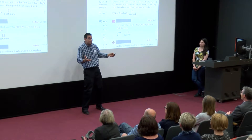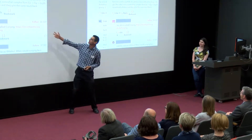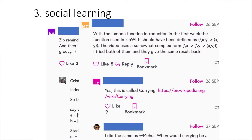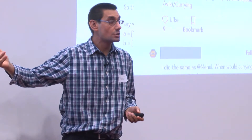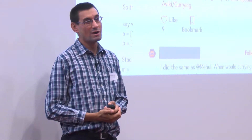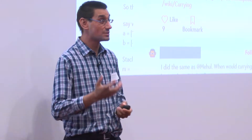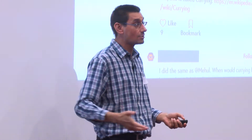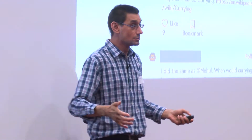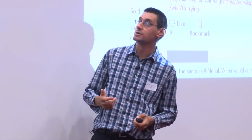Sometimes the mentors didn't even get involved — the students just did it themselves. One student posted about lambda function introduction, and others talked to each other, even linking to Wikipedia. If they made mistakes, we would jump in, but we didn't have to do that very often because some of these MOOC learners were actually more expert than we were. There were real big-wigs in there who came in and helped out in an altruistic way to engage the novice learners.